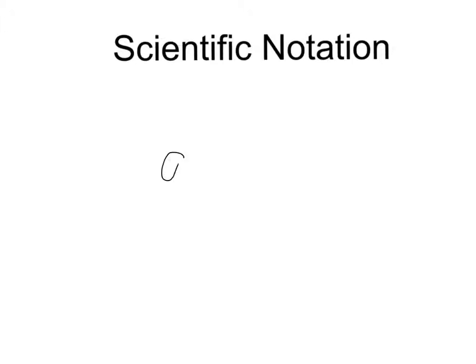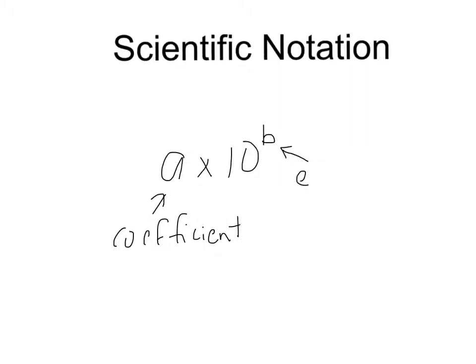In this lesson, I'm going to pretty quickly go over scientific and engineering notation. This is a review for you, so I'll go over this fairly quickly. Scientific notation is a way of expressing a really large or really small number simply. It's going to take the form of A times 10 to the B, where A is your coefficient and B is the power of 10, or the exponent. All scientific notation is going to take that form.